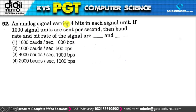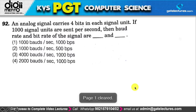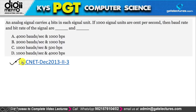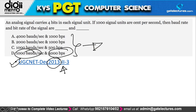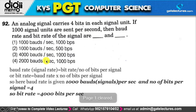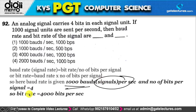Next: an analog signal carries 4 bits in each signal unit; if 1000 signal units are sent per second, what are the baud rate and bit rate? Note: this same question appeared in UGC NET December 2013 and was copied into the KVS paper with value changes. The baud rate is 1000 baud (signal units per second), and the bit rate is 4000 bits per second.